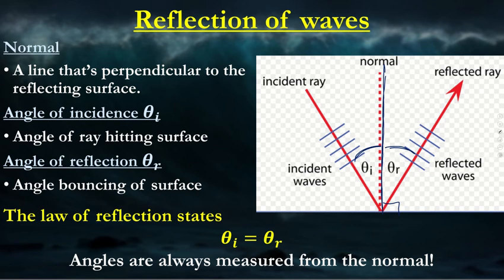The next topic is reflection of light. According to the law of reflection, we don't necessarily need Snell's Law here — the incident ray angle is equal to the reflected ray angle. Don't get theta_r confused with refraction; we're looking at reflection here. We measure it based on the 90-degree normal to the point of contact.